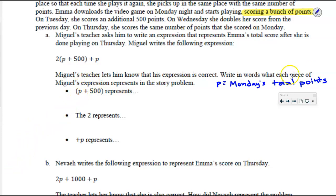What does this p+500 actually represent? Ivan. Yeah it's Monday plus Tuesday. When we read that story again we see on Tuesday she scores an additional 500 points. So p+500 represents Monday's total plus Tuesday's total, or in other words how many points she has at the end of day Tuesday.